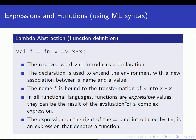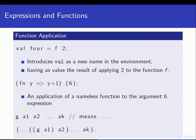In all functional languages, functions are expressible values — they can be the result of evaluation of a complex expression. The expression on the right-hand side of the equal sign is introduced by the keyword fn, and that expression denotes a function. So we are saying that f, the name, is associated with a function that has one formal parameter x, and when called, returns x squared. To call this function, similarly to lambda calculus, we just give it an argument: val 4 = f 2.